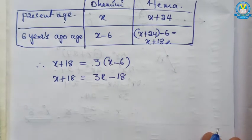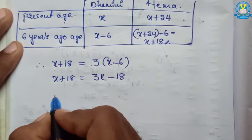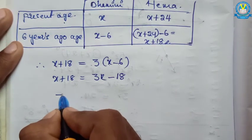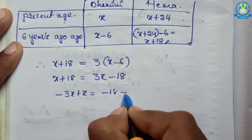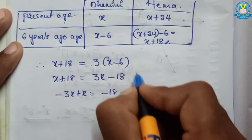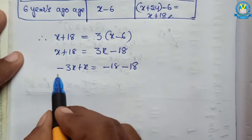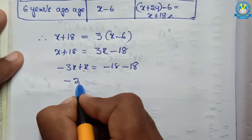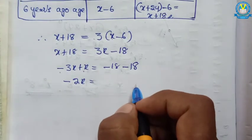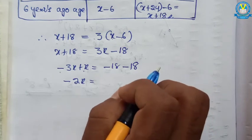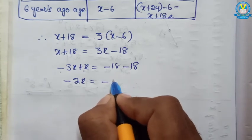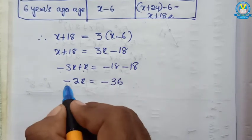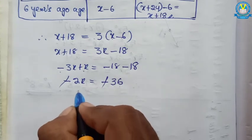Now, 3x comes to this side. After moving this side, 3x becomes negative. x plus 18 equal to 3x minus 18. Transposing: x minus 3x equals minus 18 minus 18. This is the positive integer, after moving this side negative integer. So minus 3x plus x gives minus 2x, equal to minus 18 minus 18. Both are same sign, addition: minus 36.